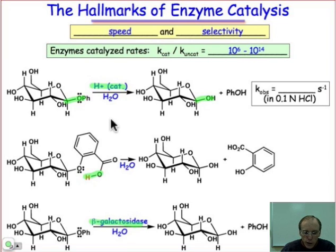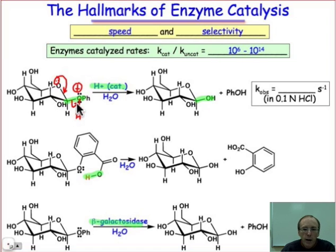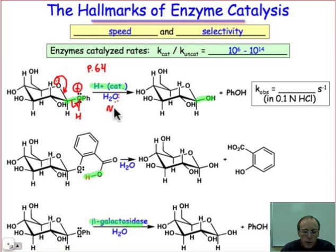We'll look at the rate coefficients, but first let me give you briefly an outline of the mechanism. The mechanism involves, first, protonation of the oxygen on the phenoxide group. That makes it a better leaving group, followed by β-elimination of that group to make an oxocarbenium ion intermediate. The oxocarbenium ion is an electrophile and is then captured by the nucleophilic water. There's a proton transfer that takes place, and the phenoxide is replaced by the hydroxide.